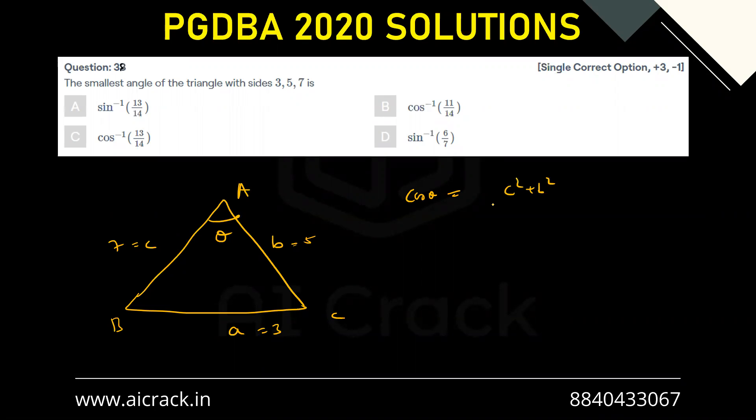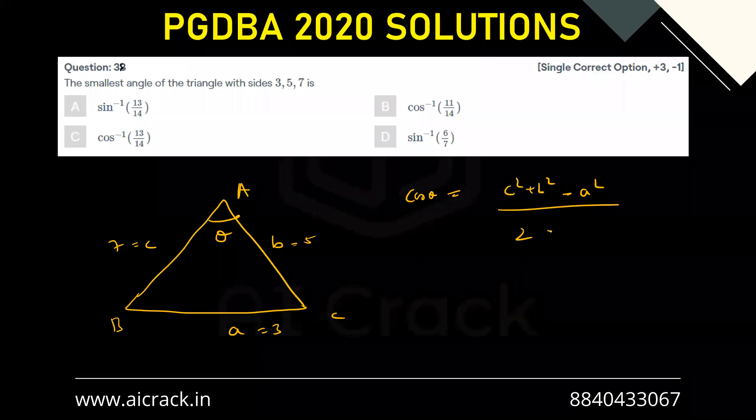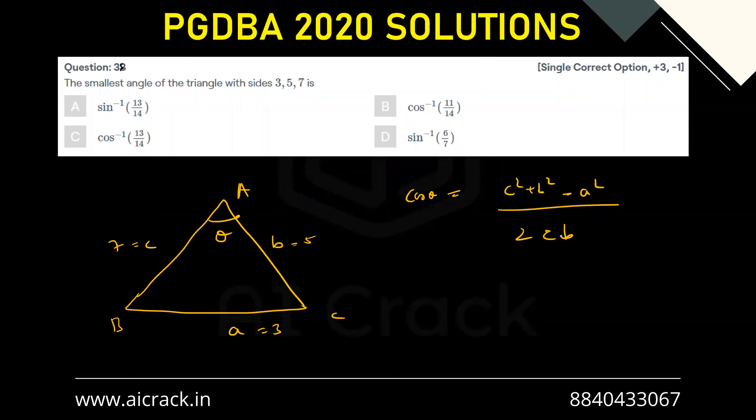So C squared plus B squared minus the opposite side minus A squared, divided by two times CB, multiplication of the adjacent sides. So this is how we define cos theta.